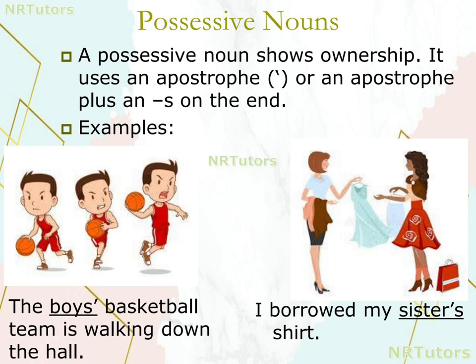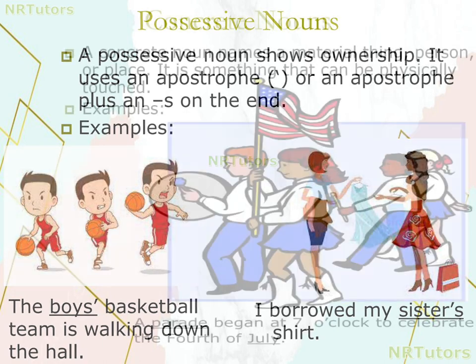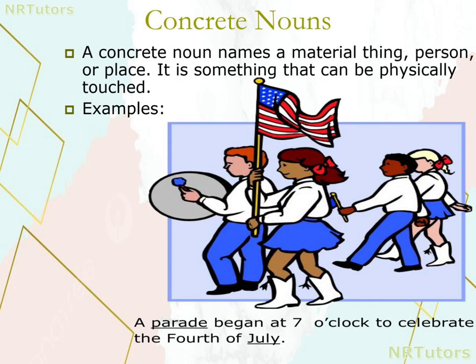So the next is concrete nouns. A concrete noun names a material thing, person, or place — it is something that can be physically touched. Example: 'A parade begins at 7 o'clock to celebrate the 4th of July.'